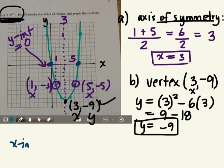So the x-intercepts are 0, 0, and 6, 0. This parabola has two x-intercepts.